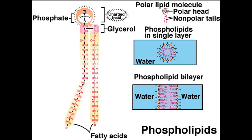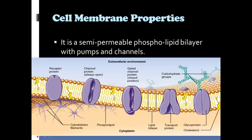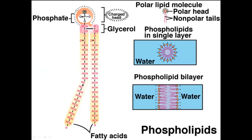Looking at the phospholipid bilayer, the circle area is a phosphate, and it is polar — it is hydrophilic, it loves water. The chains are made up of fatty acids, which are lipids. Oil is a lipid, and oil and water don't mix, so the tails are non-polar and do not like water. The cell floats in water in our body, but the phospholipid bilayer keeps water on either side. Water never stays in the middle of a cell membrane because the hydrophobic tails repel and push water in either direction.